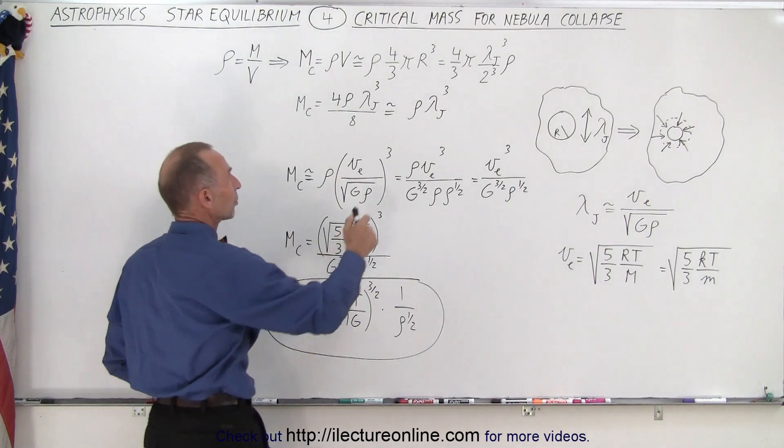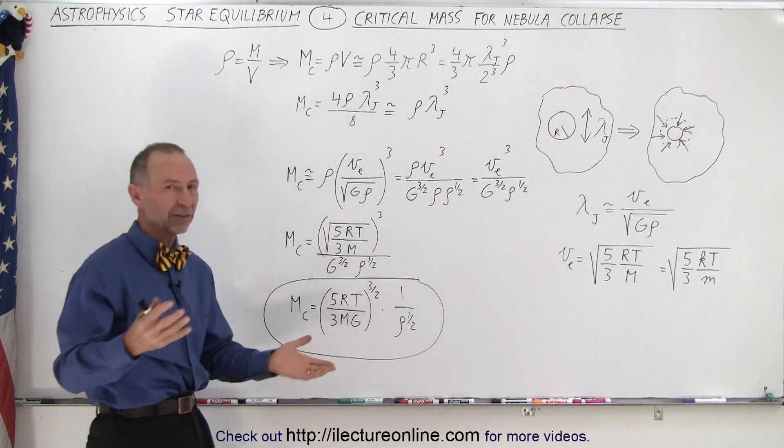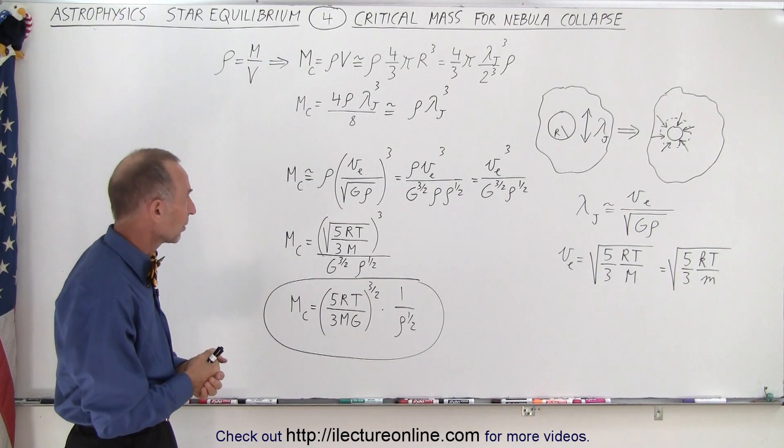Now what happened to the π and the 3? Well, since π is approximately equal to 3, we can simply just go ahead and cancel that out.